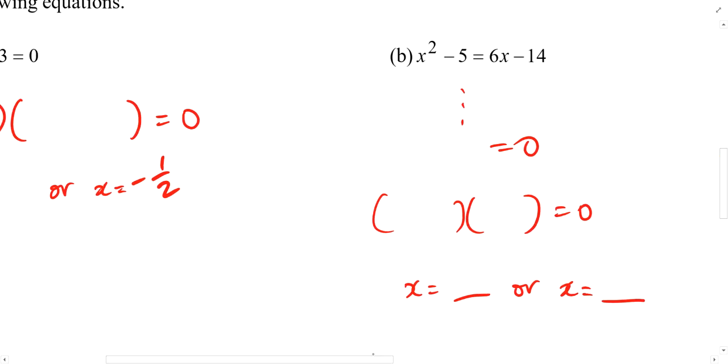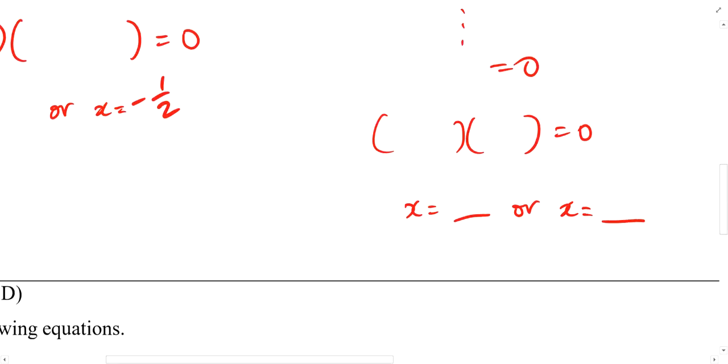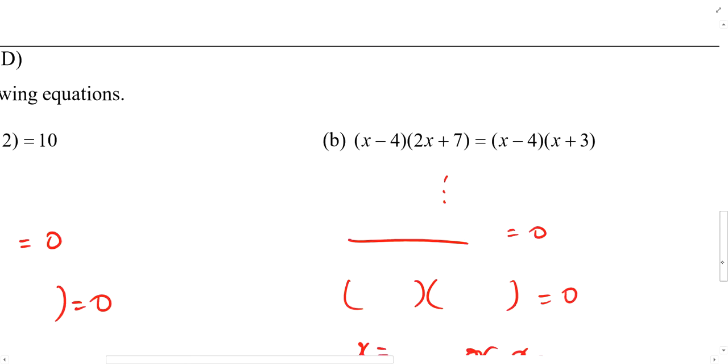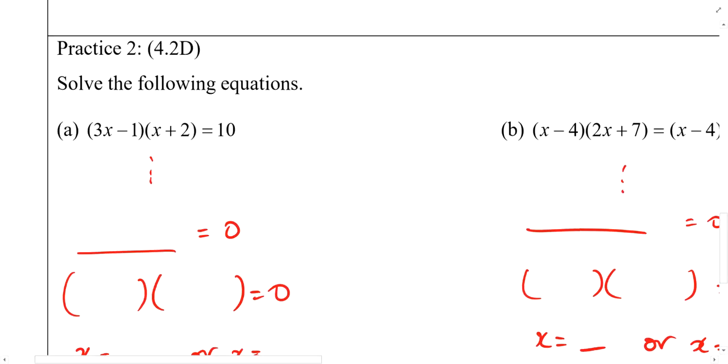Next part. 10x square minus x minus 3. So this is what I just factorize. We get 3 over 5 or negative half. Part B. We have x minus 3 times x minus 3 equals to 0. Therefore, x is equals to 3 or 3. Do we need write both? No need. Write one time, can already. So x equals to 3.